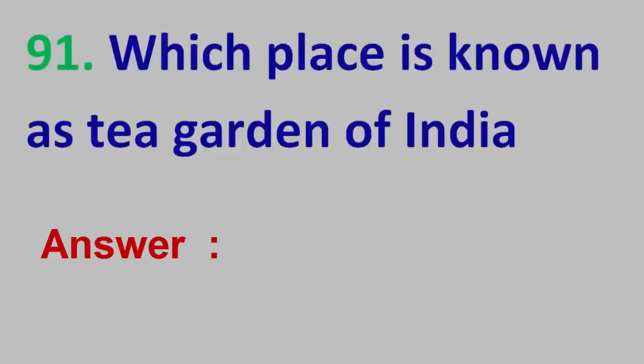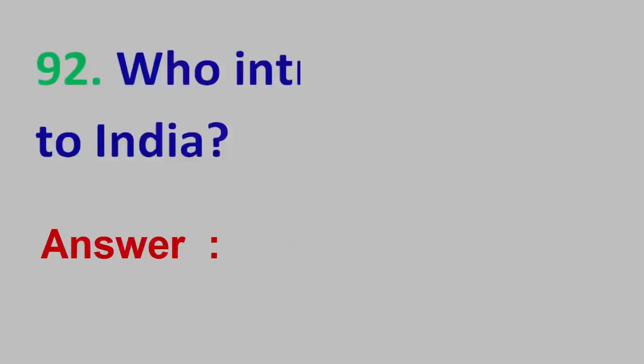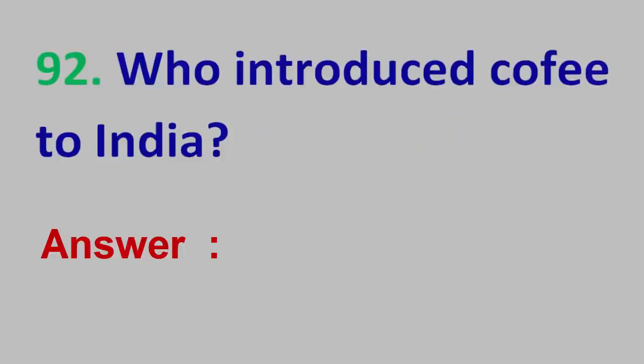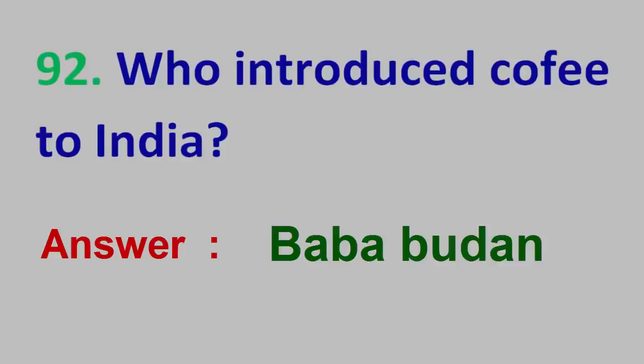Question No. 91: Which place is known as the Tea Garden of India? Answer: Assam. Question No. 92: Who introduced coffee to India? Answer: Baba Budan.